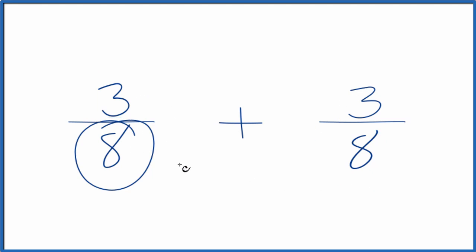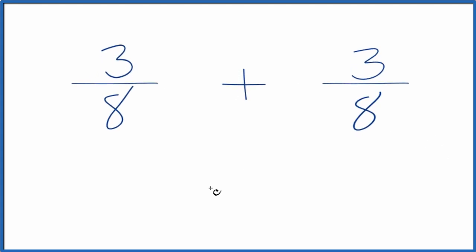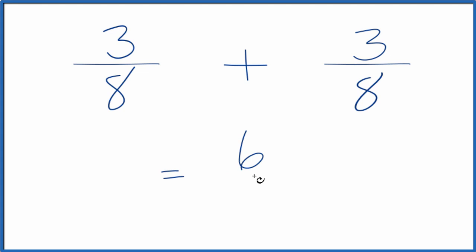So this one's kind of nice. The denominators are already the same. So 3 plus 3, that equals 6, and we just bring the 8 across here, and 3 8ths plus 3 8ths equals 6 8ths.